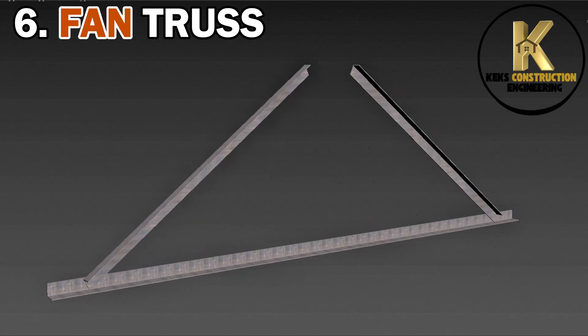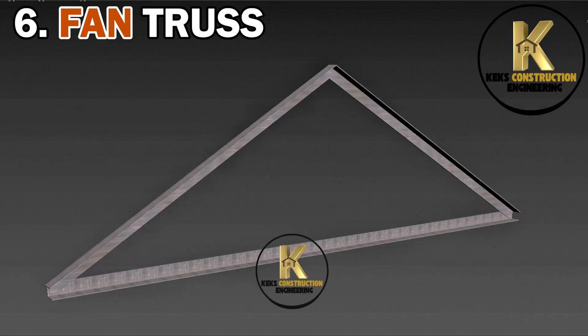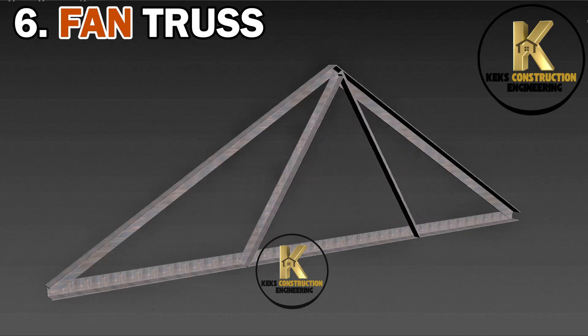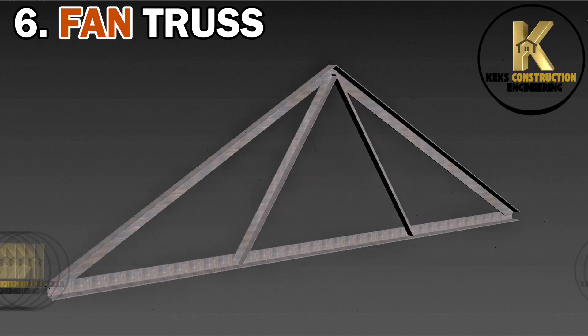6. Fan Truss. This features radiating diagonal members from the bottom cord, used for large-span roofs like auditoriums and stadiums.